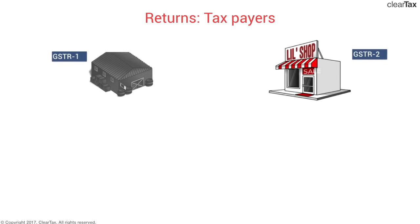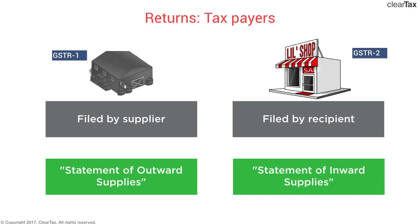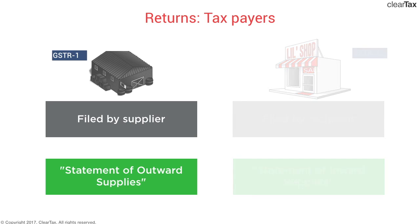Therefore, GSTR 1 filed by the supplier is called the statement of outward supplies, while GSTR 2 is filed by the recipient and is called the statement of inward supply. It can be one and the same person, because every business transaction has inputs and outputs. To keep it simple, we categorize them as filed by supplier and filed by recipient — the person actually filing can be a single person, which is the case in the majority of situations.